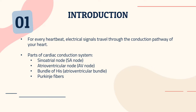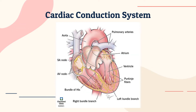For every heartbeat, electrical signals travel through the conduction pathway of your heart. The parts of the cardiac conduction system are the sinoatrial or SA node, the atrioventricular or AV node, the bundle of His, and the Purkinje fibers. Here's a diagram of the cardiac conduction system displaying all the parts and their typical locations in the heart.